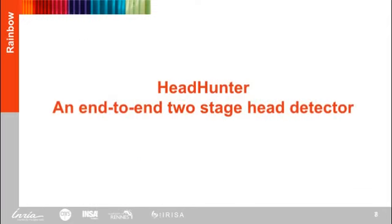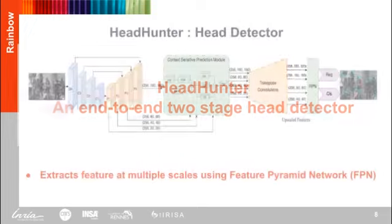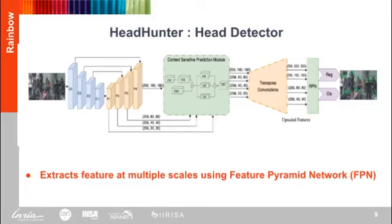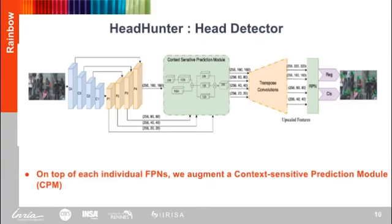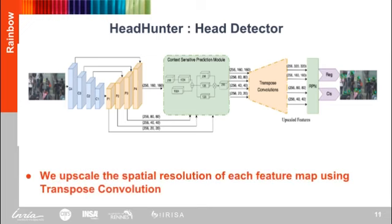Supplementing this, we develop a baseline head detector on CrowdHD called Headhunter, which is better adapted for head detection in crowded environments. Headhunter is an end-to-end two-stage detector with three functional characteristics. First, it extracts features at multiple scales using a Feature Pyramid Network with a ResNet-50 backbone. Images of heads are homogeneous in appearance and often, in crowded scenes, resemble extraneous objects, typically background. For that reason, we augment a context-sensitive prediction module on top of each individual FPN. As detecting pedestrian heads is a problem of detecting many small-sized adjacently placed objects, we use transpose convolution on features across all pyramid levels to upscale the spatial resolution of each feature map.